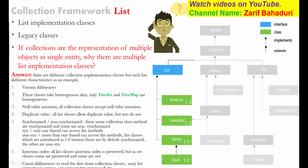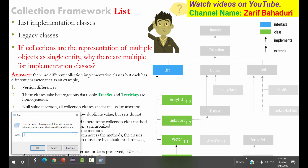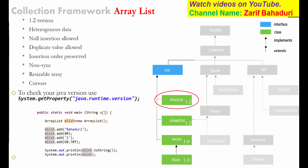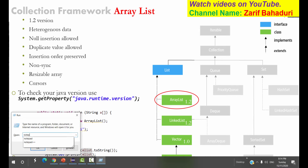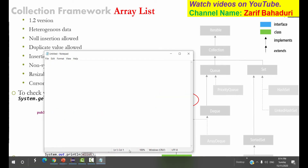By default, version 1.0 classes are synchronized and the others are non-synchronized. This means only one thread can access the synchronized class methods. Another difference is insertion order: all List classes preserve insertion order. For example, if you enter student1, student2, student3, student4, the data will be retrieved in that same order.